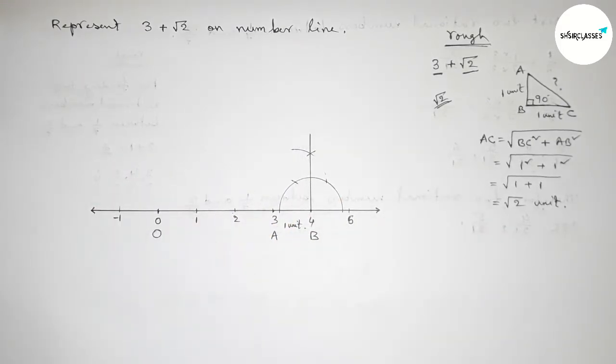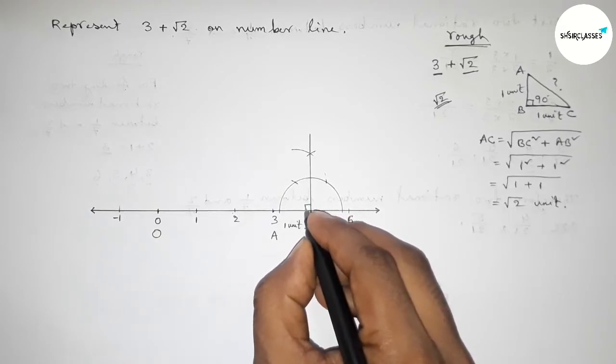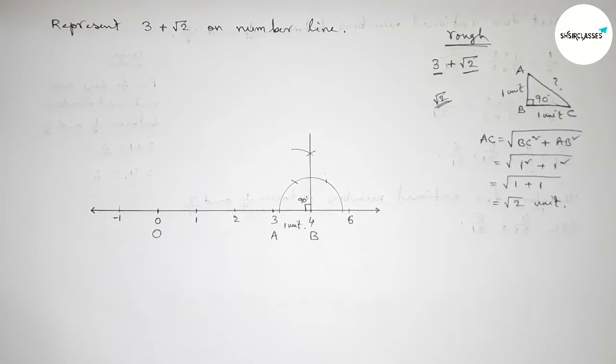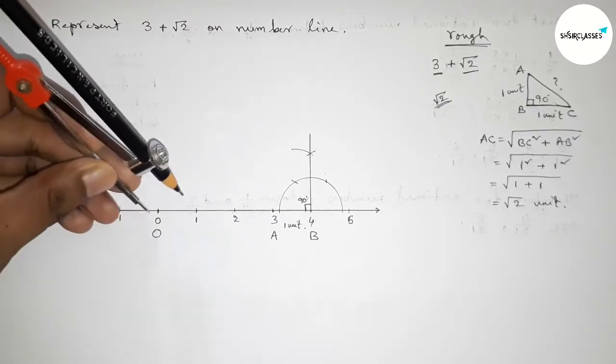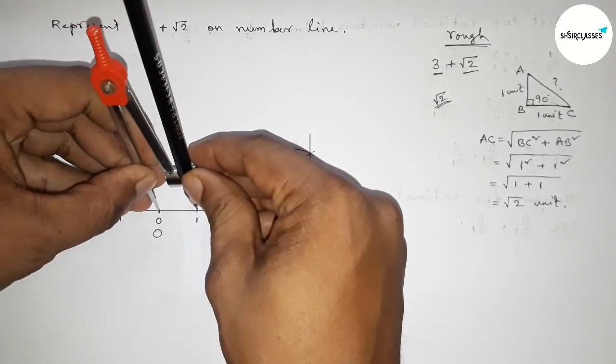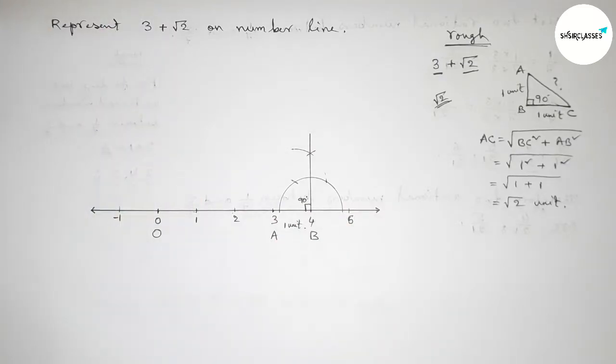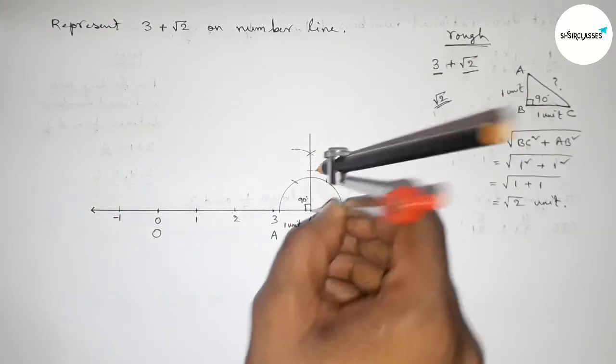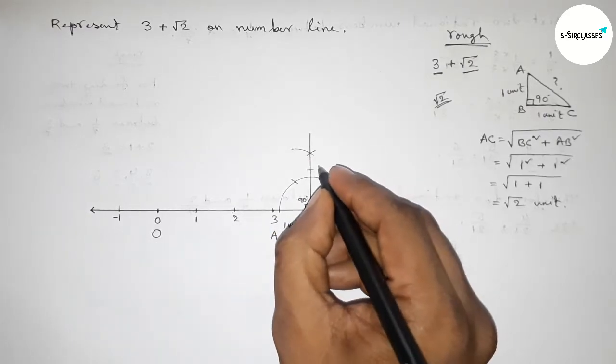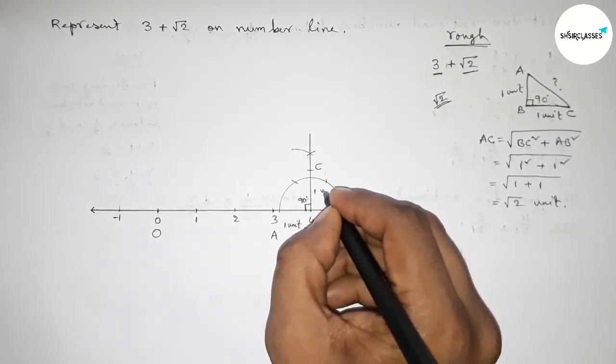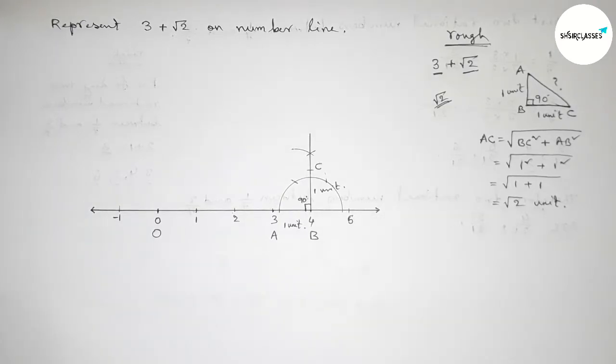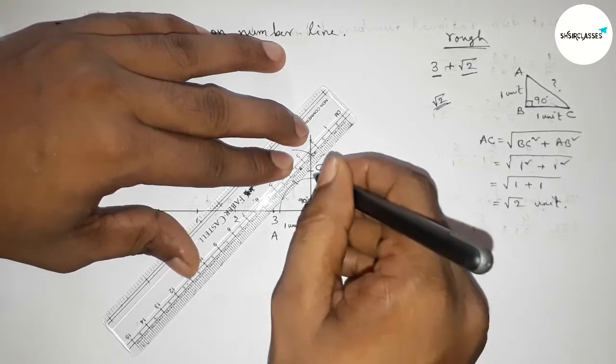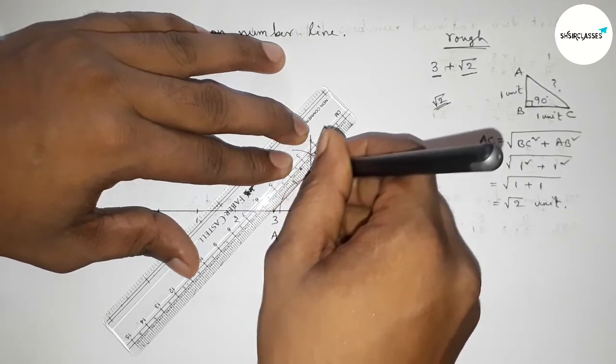Now join this to get a 90-degree angle. Take one unit length between any two numbers using the compass and put the compass on point B and cut here. Take point C here; this is one unit length. Now join A and C.